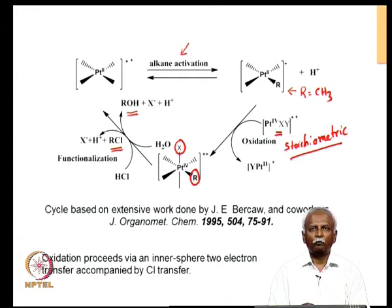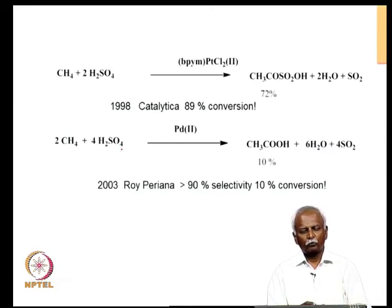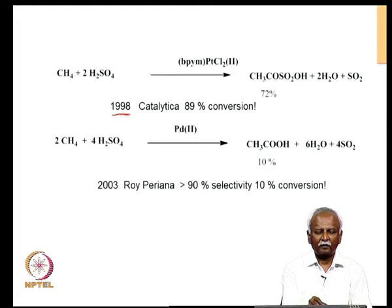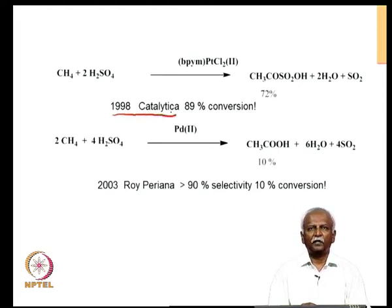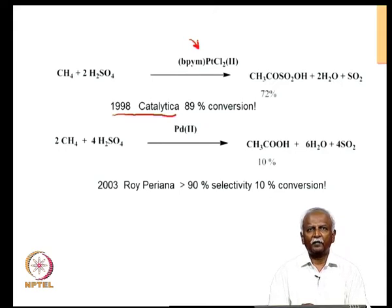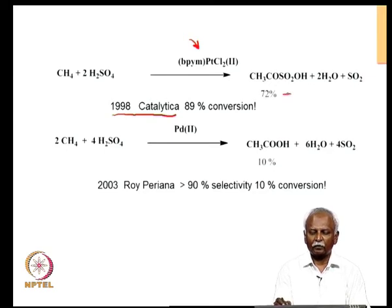What you have seen here is a case of electrophilic activation of the C-H bond in methane, because you have removed an electron from the methane and released the hydrogen as H⁺. This reaction, although it was very important, could not be reproduced by any other catalyst. It was only in 1998 that an alternative system was discovered by the company Catalytica, which showed that if you have a nitrogen-based ligand on platinum, you could carry out this reaction with extremely high selectivity.